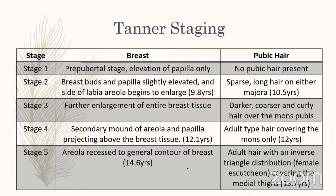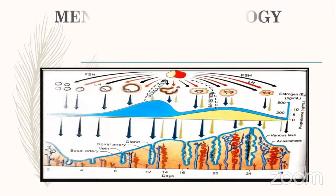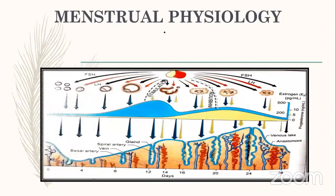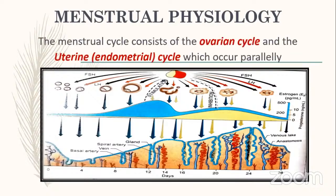Moving to menstrual physiology. The menstrual cycle consists of an ovarian cycle and a uterine/endometrial cycle occurring in parallel, controlled by the hypothalamo-pituitary-ovarian axis. The cycle is divided into ovarian phases and uterine/endometrial phases, with corresponding histological changes observable on endometrial biopsy.